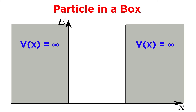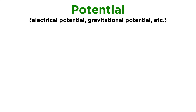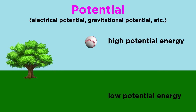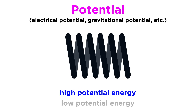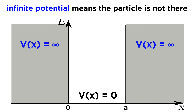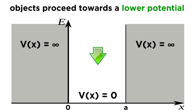We assume a potential where V of x equals infinity everywhere except between x equals zero and x equals a, within which it equals zero. We are probably familiar with the concept of a potential, like an electrical potential or gravitational potential, and we know that an object will tend to go towards a lower potential. A ball falls from greater gravitational potential energy down to the ground, and a compressed spring relaxes from higher elastic potential to its equilibrium position.